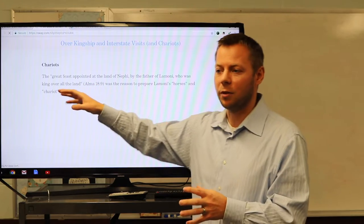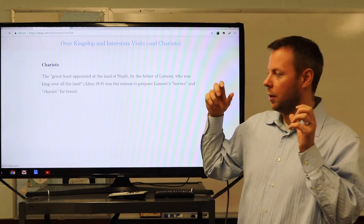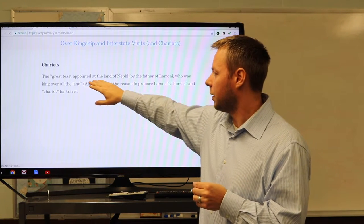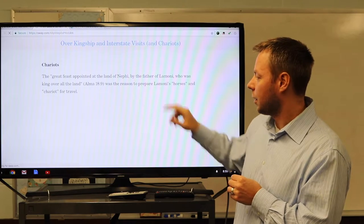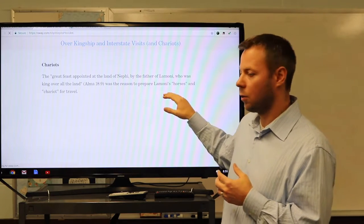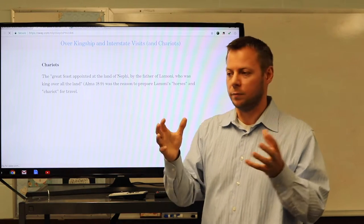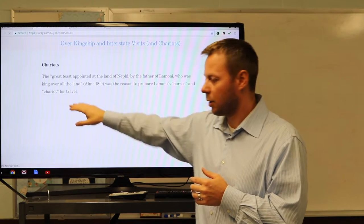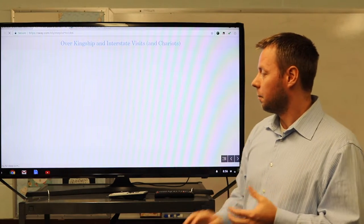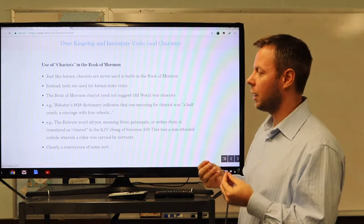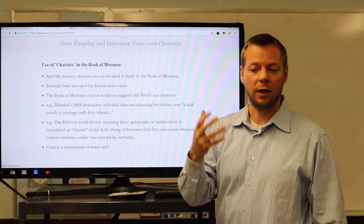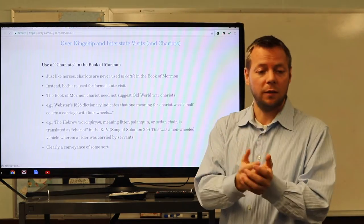It's in the context of this story that we get mention of a chariot, right? Because, as you recall, when Ammon, he goes to feed the horses, right? And they're preparing the horses and the chariots. Why? Probably to go to the great feast appointed at land of Nephi by the father of Lamoni, who was the king over all land. That was the reason to prepare Lamoni's quote-unquote horses and chariot for travel. We already discussed how we, I think most scholars believe that horses is a mistranslation of some other animal. And we're going to talk about chariot for travel. This has been, you know, attacked as, we think of chariot, we think of battle chariots in the Old Testament, Ben-Hur and whatnot, right? But how are chariots, again, looking at the text, we have to look at how chariots are used in the Book of Mormon. Just like horses, right, is the Book of Mormon describing a horse culture? Well, that would be a big problem, but we've decided that it wasn't describing horse culture. It only mentions them very specifically in these formal state visits.